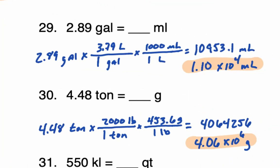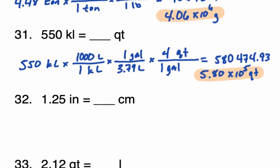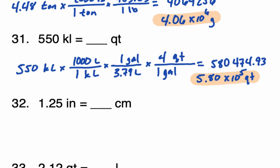In number 29, we have three significant digits and we end up with 1.10 × 10⁴. This is an instance where you have to write it in scientific notation to represent it correctly. On your calculator it would have shown 1.09531 × 10⁴. We only need the first three digits, so we drop the five — but because of the nine, it rounds up to 10, which is why we report 1.10 × 10⁴. Then 4.48 gives 4.06 × 10⁶, and 550 with three significant digits gives 5.80 × 10⁵ — another instance where scientific notation is necessary for proper representation.